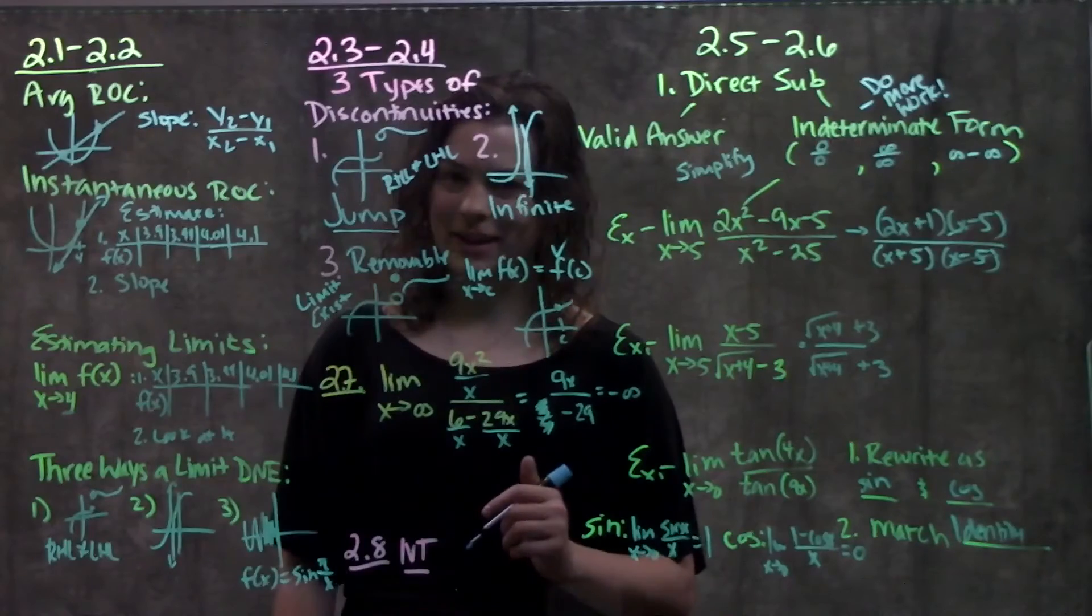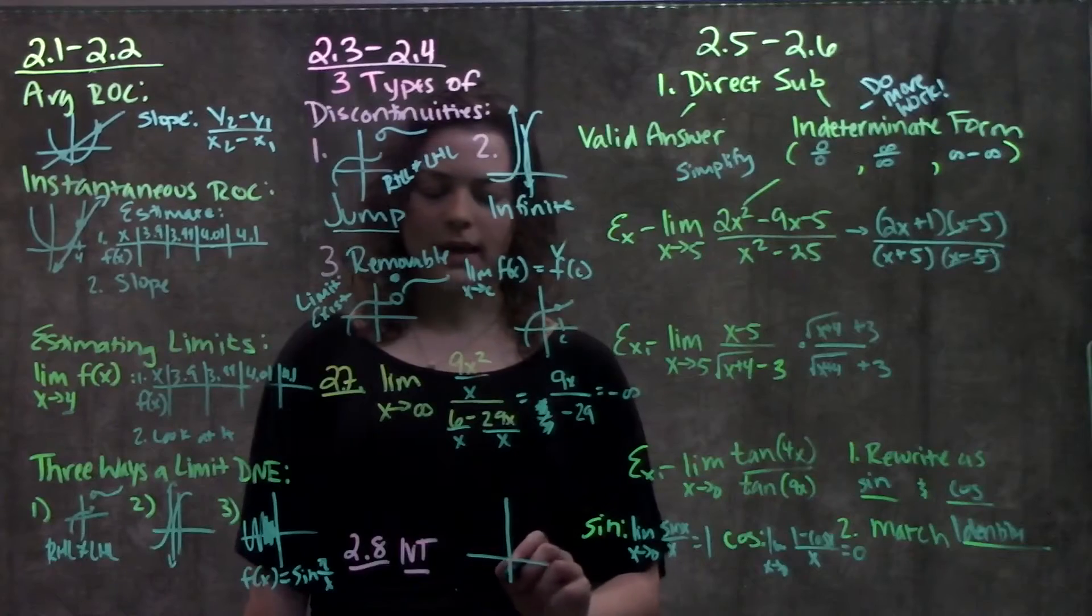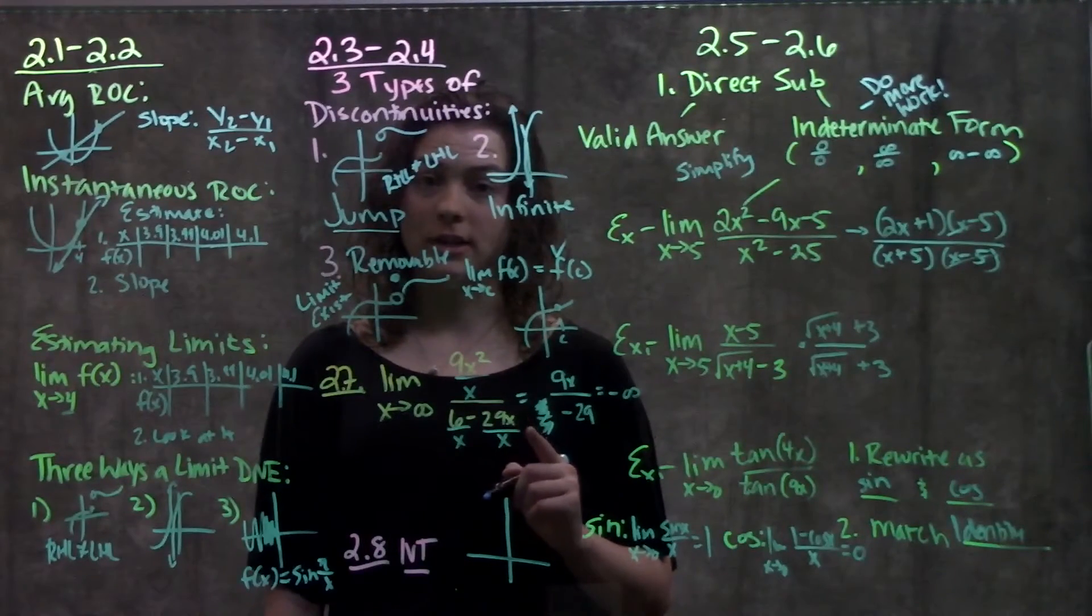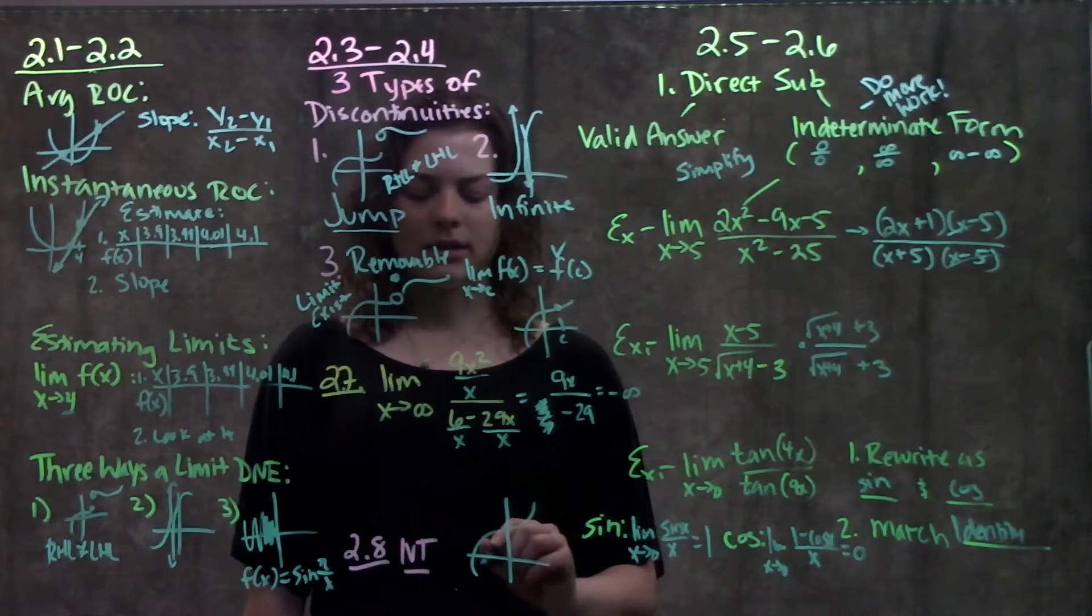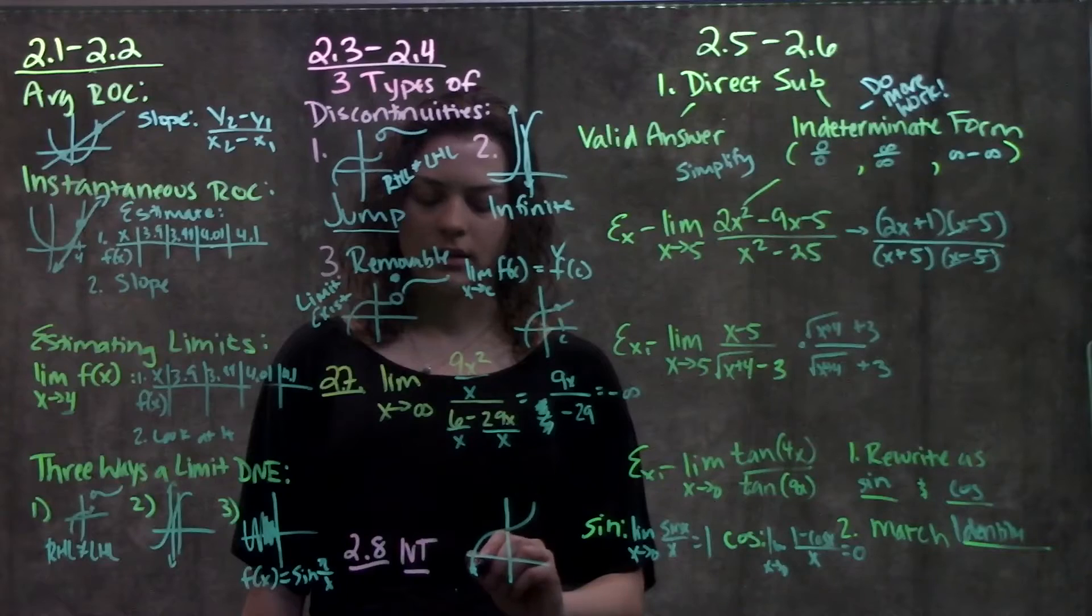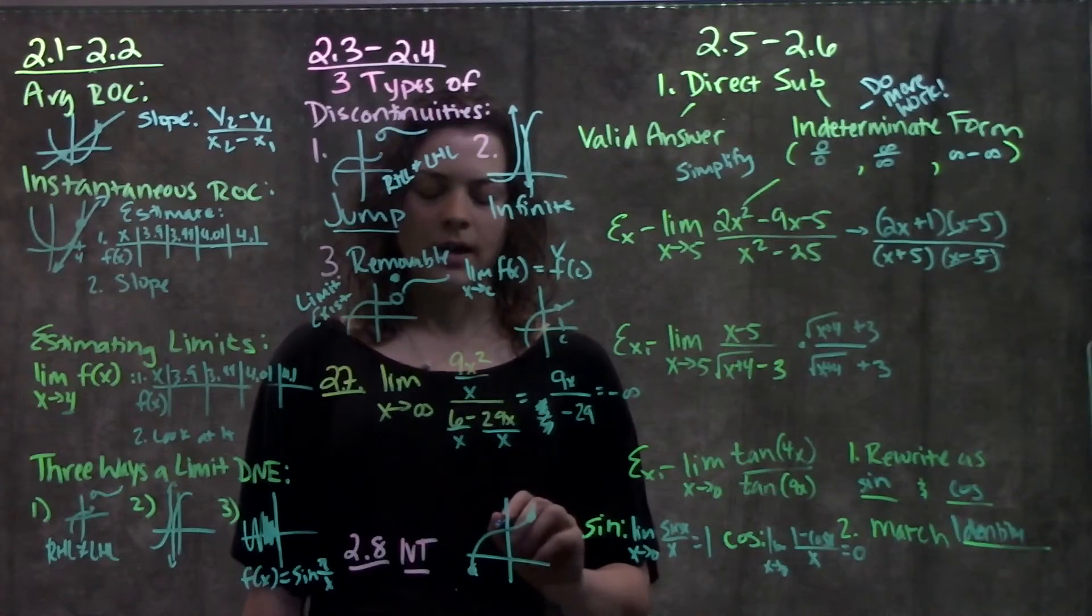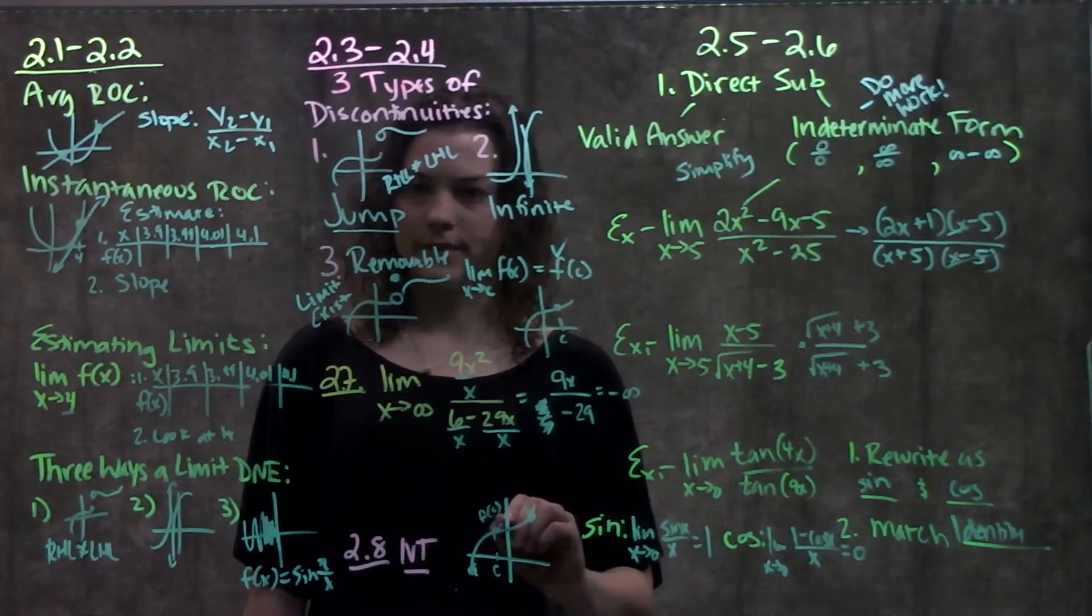Last section, intermediate value theorem. What intermediate value theorem told us, in real basic terms, is one, if we have a function that's continuous - that has to be the first point, our function is continuous - something like this, and we have some value down here that's negative, some value up here that's positive, then there must be some value here in the middle that is equal to this, f of c.